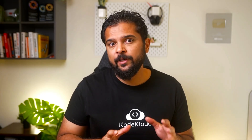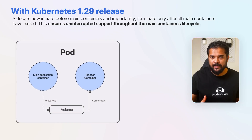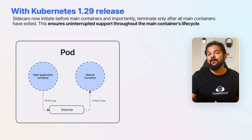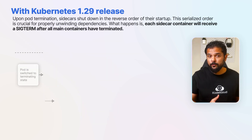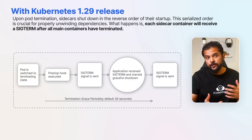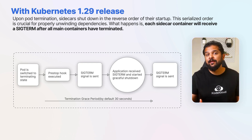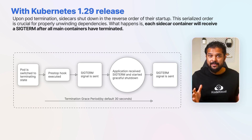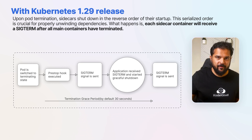Kubernetes 1.29 formally enhances the sidecar container pattern with two key features. Sidecars now initiate before the main containers and, importantly, terminate only after all the main containers have exited, ensuring uninterrupted support throughout the main container's lifecycle. Upon pod termination, sidecar containers shut down in the reverse order of their startup — this serialized order is crucial for properly unwinding dependencies. Each sidecar container will receive a SIGTERM after all the main containers have been terminated.